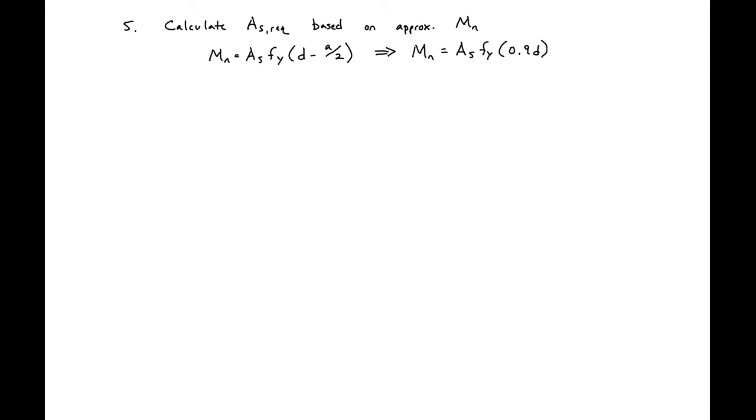We're next ready to calculate our AS required. We're going to do this based on an approximation of our lever arm as 0.9 D. We'll first set our MN approximate expression: MN equal to AS FY times 0.9 D, and set this equal to our MN required that we found earlier in the example.